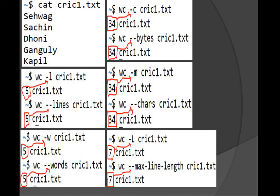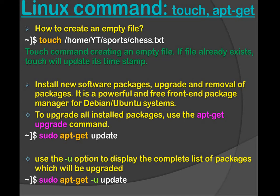For counting the number of characters we can use wc --chars crick1.txt — same result. Then to count the length of the longest line, we use wc -L filename. When we press Enter, we get seven — meaning the length of the longest line is 7 characters. We can also use wc --max-line-length filename, which again displays seven.